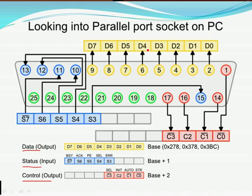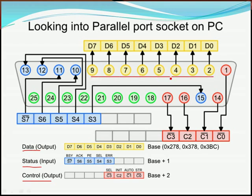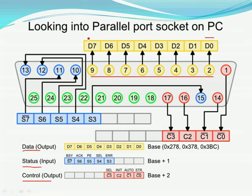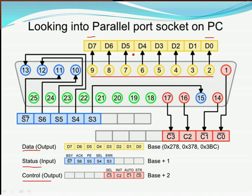The data pins are colored yellow in this picture, and they are pins 2 to 9. There are 8 pins for data pins, and they're also called D0 to D7. These data pins are used to send data to peripheral devices.